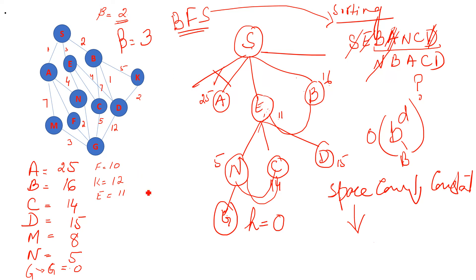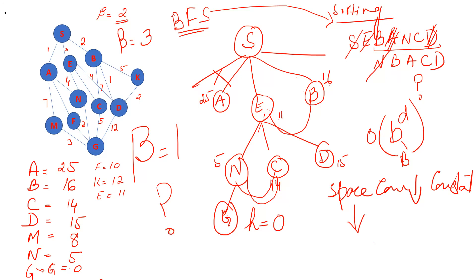Beta can be 2, 3, 4, 5, 6, or whatever suits the situation. However, if the beam value beta equals 1, we are using the hill climbing algorithm, which will be discussed in the next lesson.